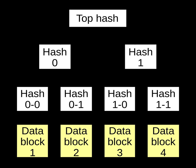Sun's ZFS file system has used hash trees. Hash trees are used in the Google Wave protocol, Git distributed revision control system, the Tahoe-LAFS backup system, and Bitcoin peer-to-peer network, in a number of NoSQL systems like Apache Cassandra, and in the BitTorrent protocol. Hash trees were patented in 1979 by Ralph Merkle.